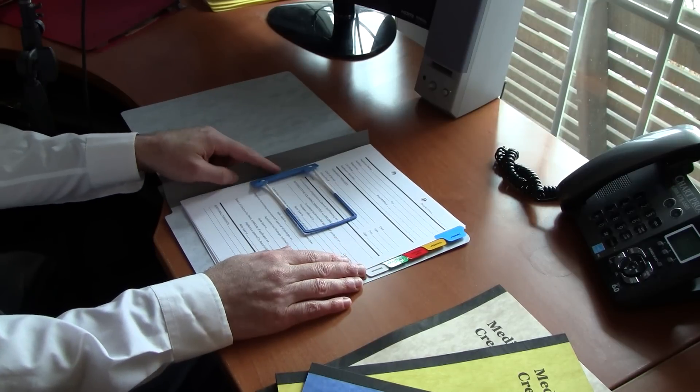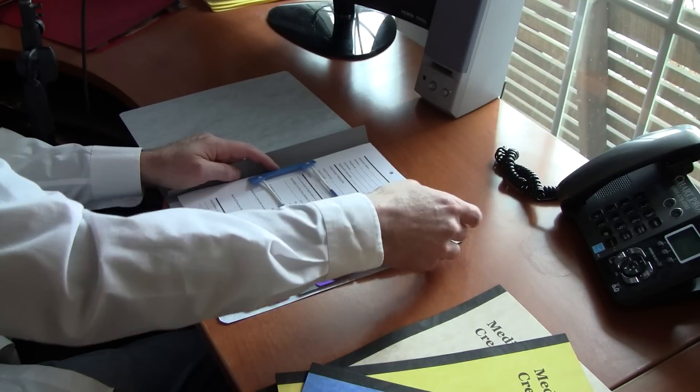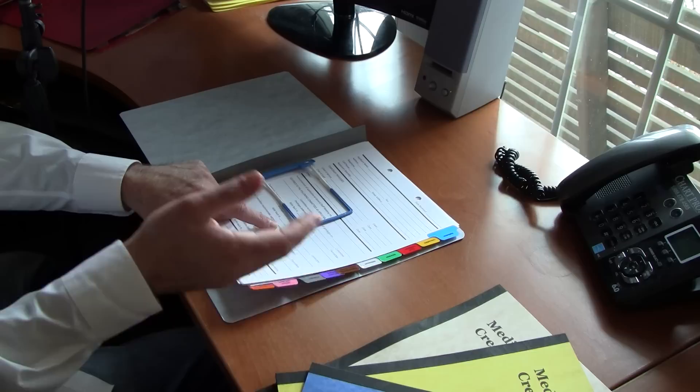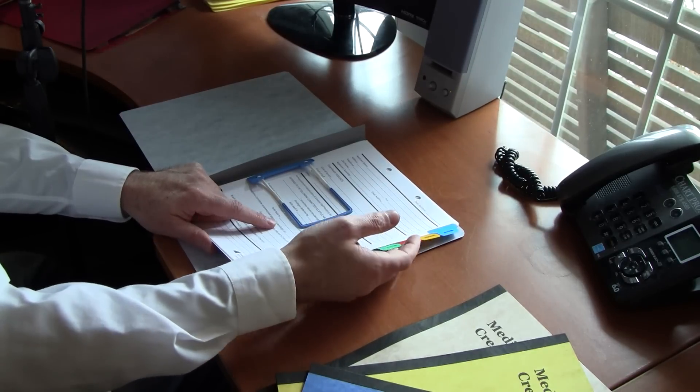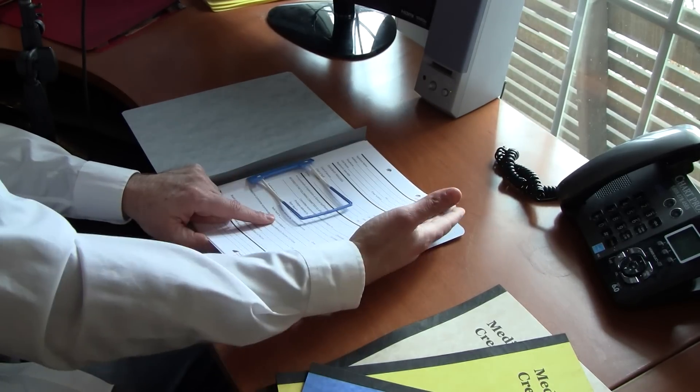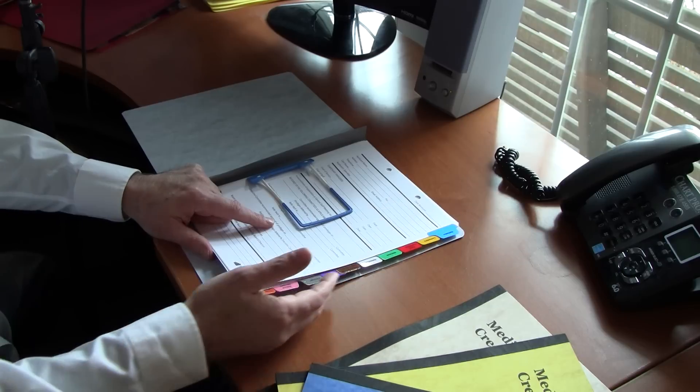On the inside of the folder, we have two items. We have an easy file fastener and we have a set of pre-printed tab dividers. The tab dividers are printed with the normal titles like board certification, insurance, references. They're printed on both sides and you'll notice that they're color coordinated, so each title has a different color.